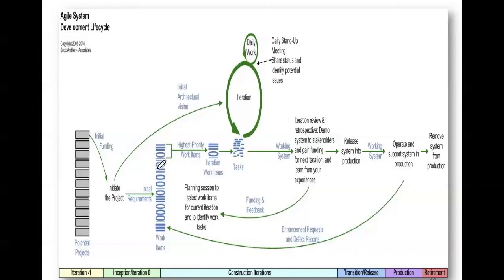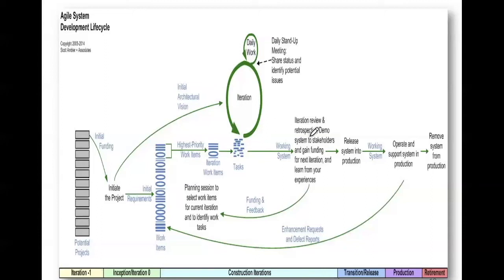You then take the next highest priority requirement or subset of requirements and go through design, implementation, and testing again — a building cycle. You're taking the second batch of requirements and adding them to the product you've already developed, building the product up. You deliver and show that to the client, and on it goes until you deplete the full set of requirements. Design, implementation, and testing of small units is repeated — with testing and demonstration to the client happening from very early on. That's what characterizes agile.